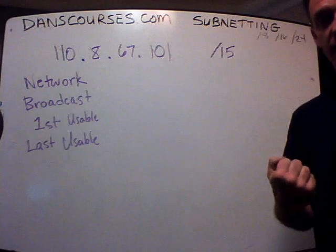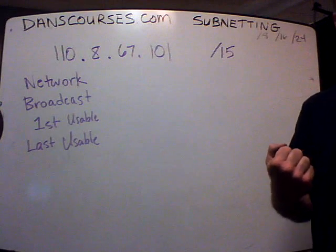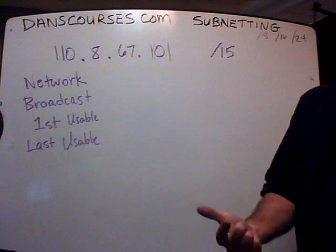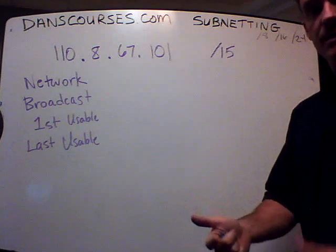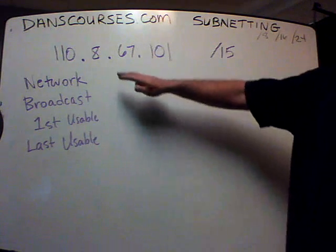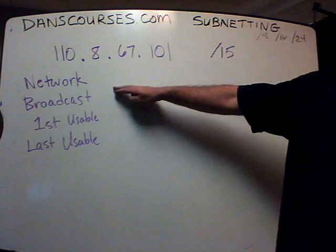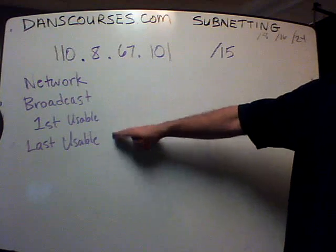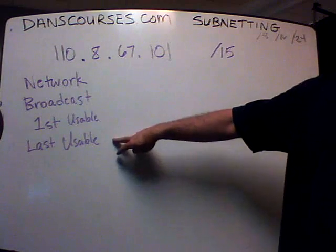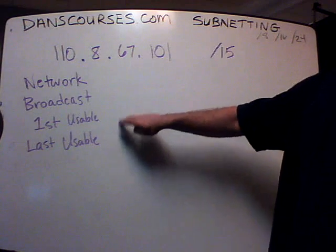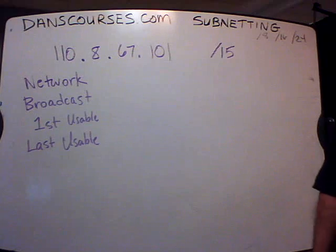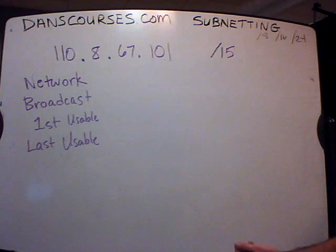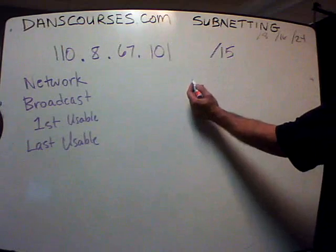We're back. We're going to do a Class A scenario, subnetted, and find the network address, the broadcast address, the first usable host, and the last usable host for this IP address with this subnet mask. Let's do it pretty quickly. The easiest way to do this is to ask: what's the magic number?